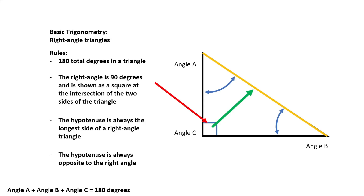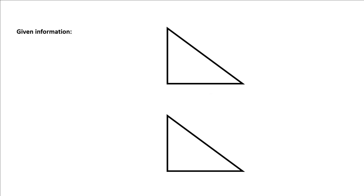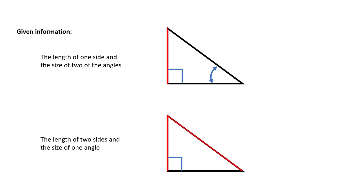These rules will help us to be able to solve unknown information in right angle triangles using trigonometry, but there is some given information that we need to have. We can't just have a triangle with no information. We need to have at least three pieces of information before we can solve the rest of a triangle. We need to know the length of one side and the size of two angles, or we need to know the length of two sides and the size of one angle.